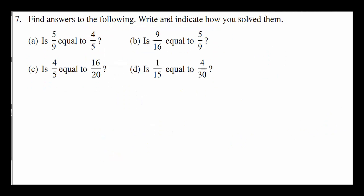Find answers with the following. Write and indicate how you solve them. Let's solve them. Is it equal. So first make them like. 5 times 5 is 25. 5 times 5 is 45. 9 times 5 is 45. 9 times 4 is 36 and 9 times 5 is 45. B, 36 over 45. So 36, not equal. So let's cross them. Not equal.